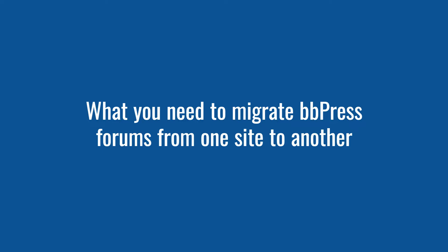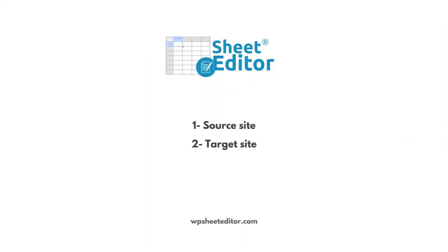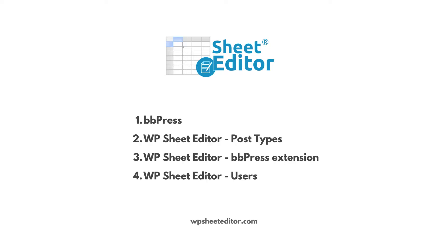First, let's see what we need in order to move bbpress forums from one site to another. We need two sites: the source site is where we have the forums we want to migrate, and the target site is where we will move the forums. We also need to install and activate the following plugins: bbpress, WP Sheet Editor post types, WP Sheet Editor bbpress extension, and WP Sheet Editor users. You can read our written guide and get the necessary plugins by following the link in the description of this video.